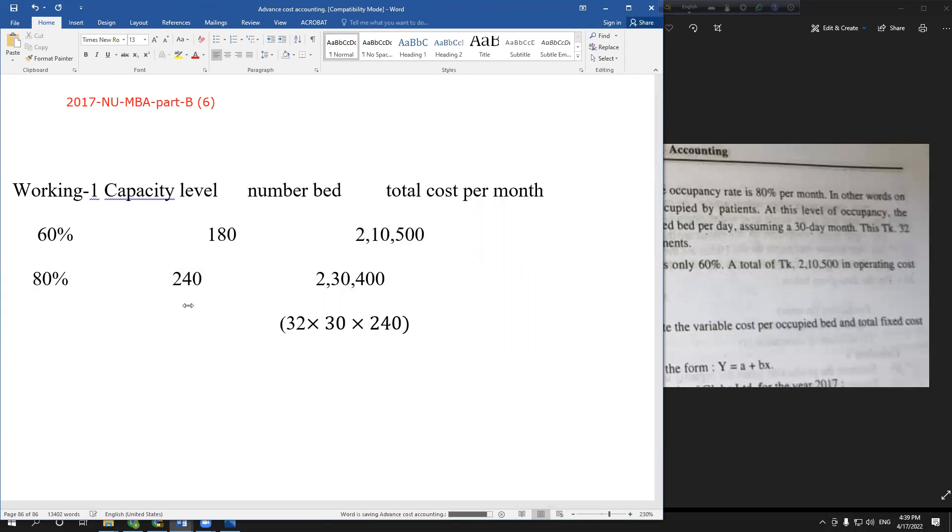Now for the equation: variable cost is represented by 'a', and fixed cost is also part of the function. We have variable cost and fixed cost components.